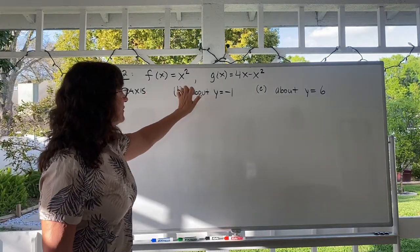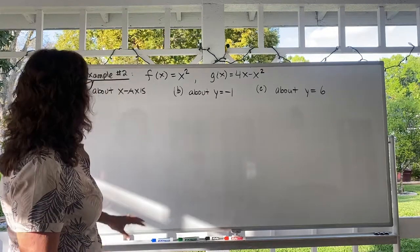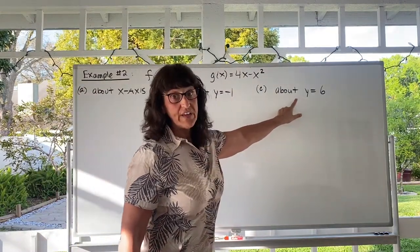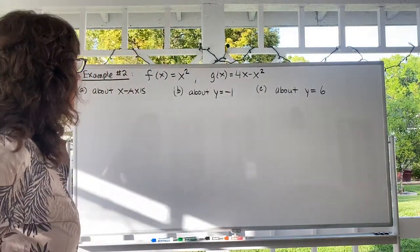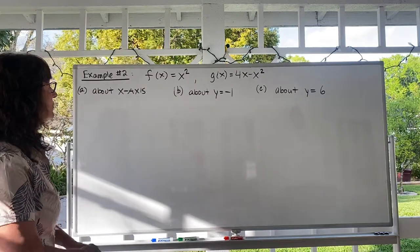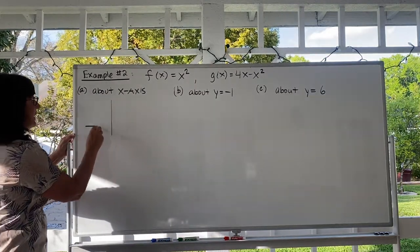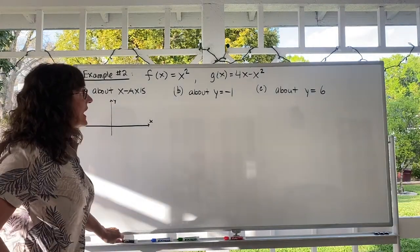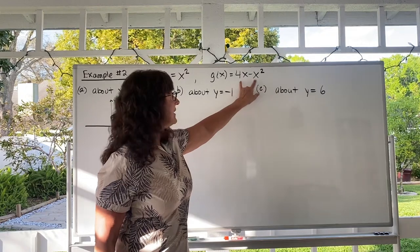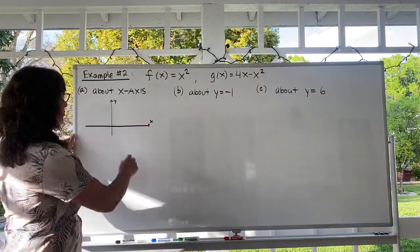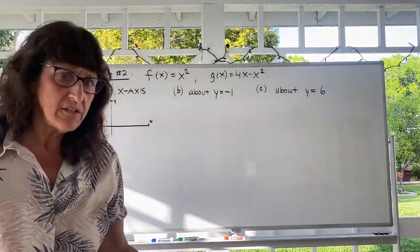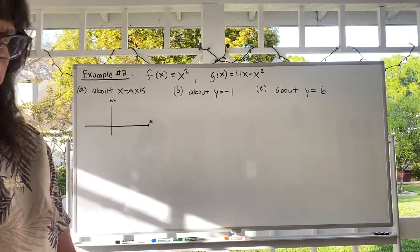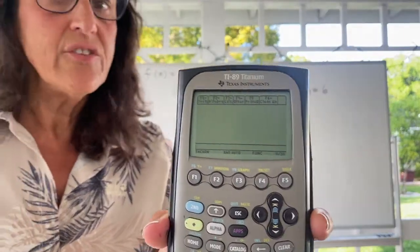Now we're going to use f(x) = x² and g(x) = 4x − x². We're going to revolve around the x-axis, then around y = −1, and then about y = 6. First, we want to draw the graph. Here's my y-axis and x-axis. y = x² is a parabola that sits on the origin and opens up; 4x − x² opens down with zeros at 0 and 4. If you're not quite sure what it looks like, use the TI-89. Clear the home screen and let's graph these functions.